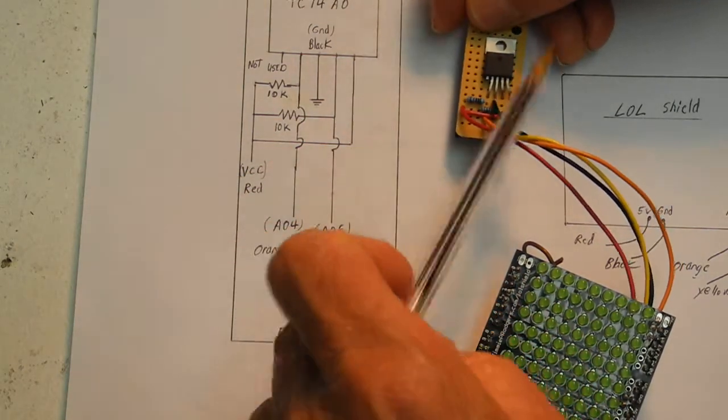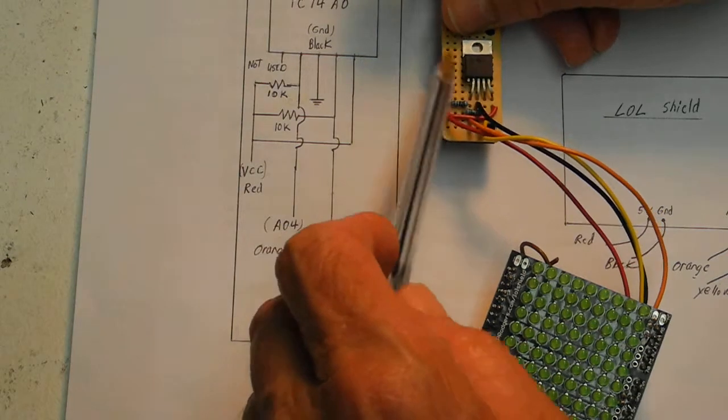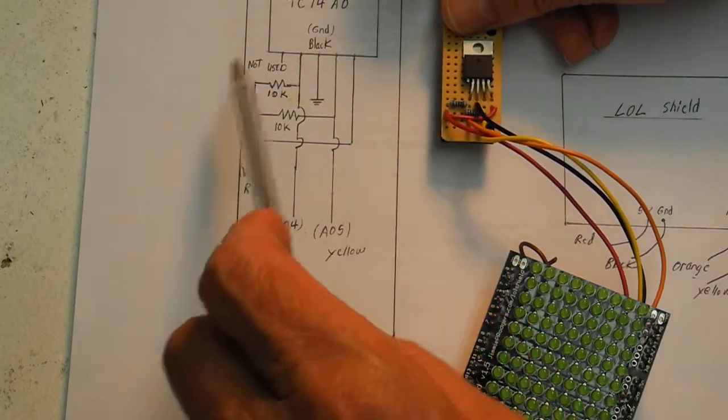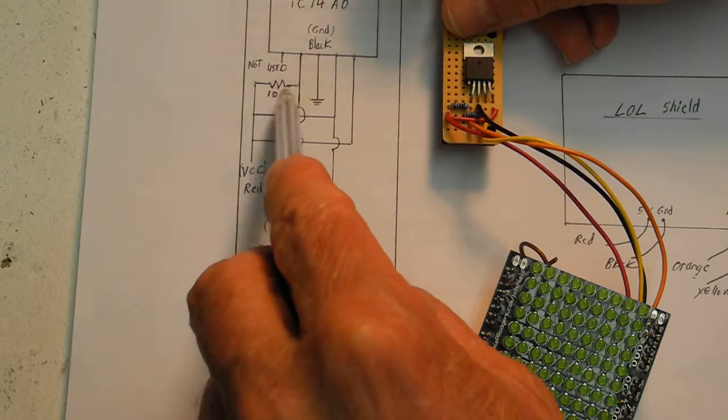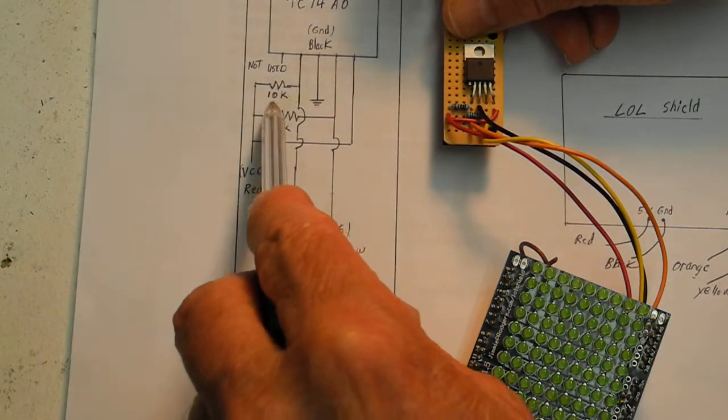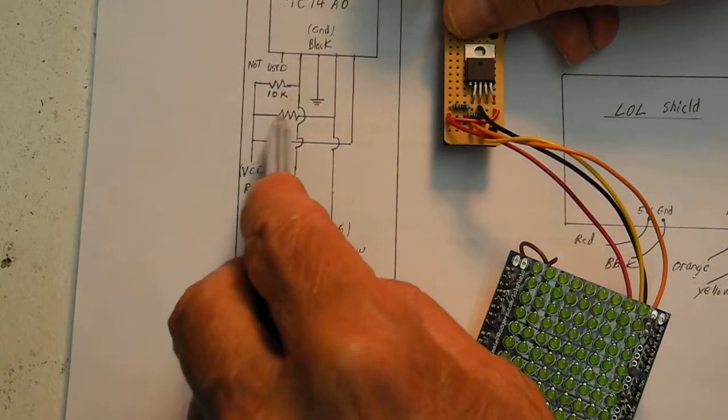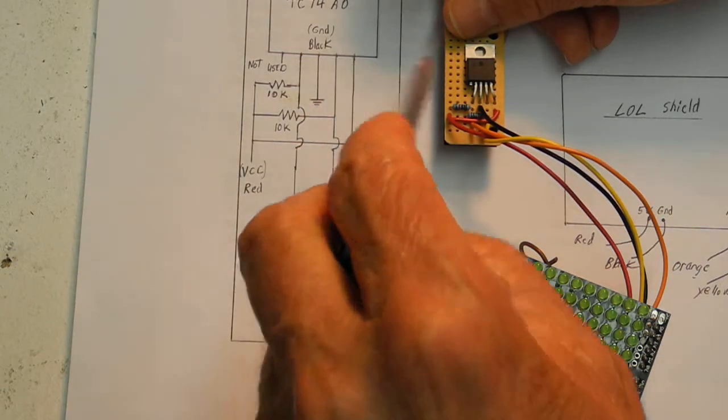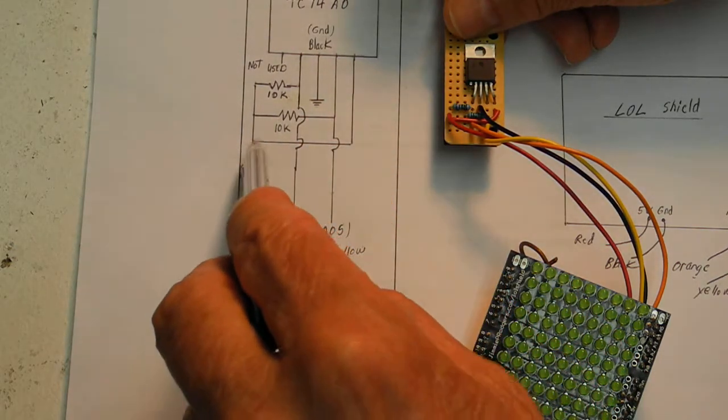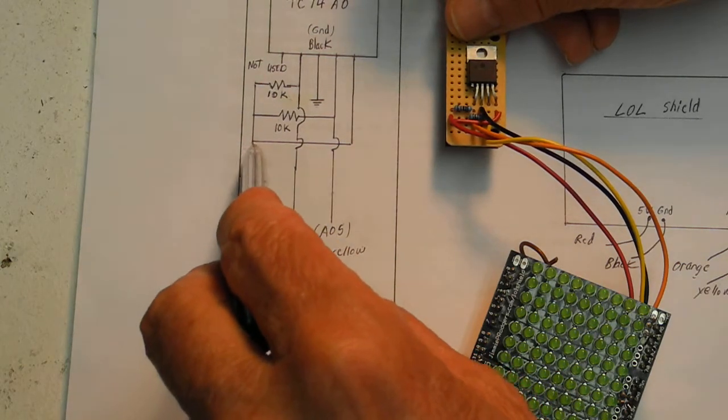So here's the TC-74 and it has five legs. First one is not used. Second leg, you hook a 10K resistor to it and then the fourth leg you put a 10K resistor. Connect those together. Then pin 5 comes down and ties in here and that goes to voltage plus.